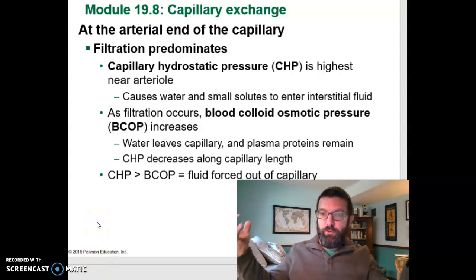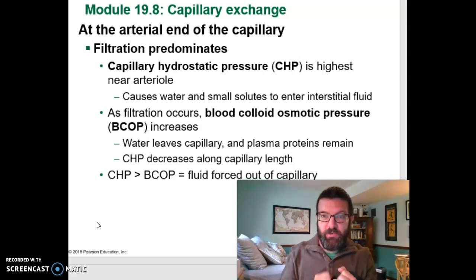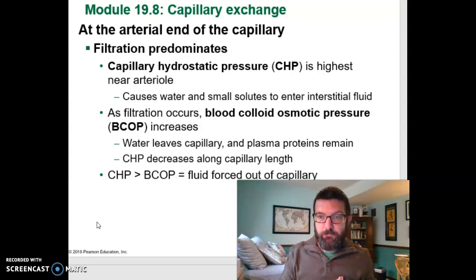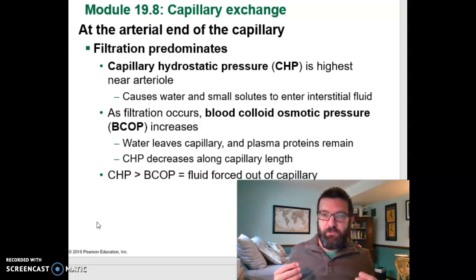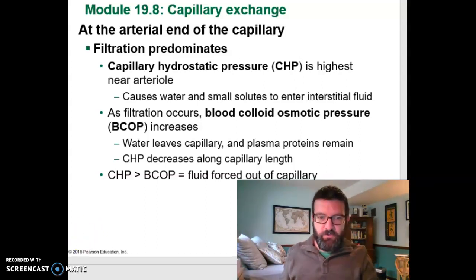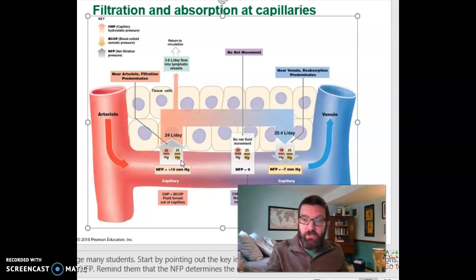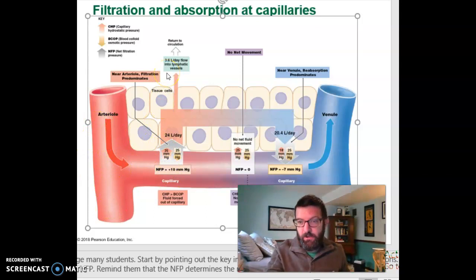You also have a pressure pulling back in toward the inside of your capillaries — that's blood colloid osmotic pressure. Osmotic pressure means water tends to diffuse toward where there are more solutes. You have a lot of solutes in your blood that are too big to diffuse out, like proteins, so water flows toward them. At the beginning of the capillary, hydrostatic pressure is higher than colloid osmotic pressure — roughly 35 pushing out versus 25 pulling in — a net of 10 out. So the net flow of fluid is out toward your tissue fluid, carrying amino acids, glucose, sodium, and other dissolved substances.